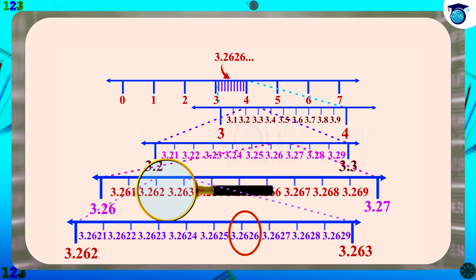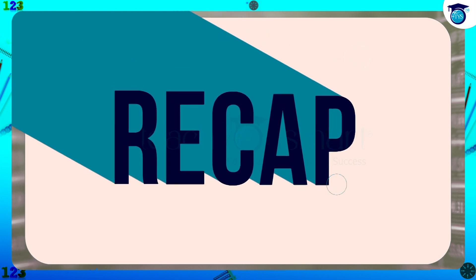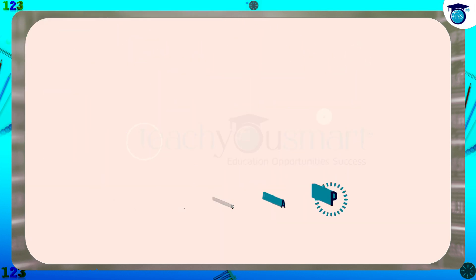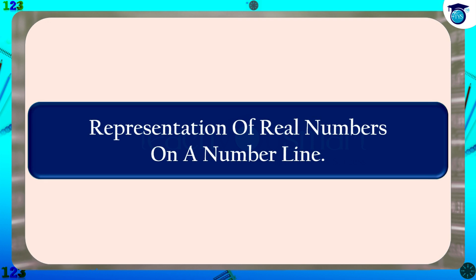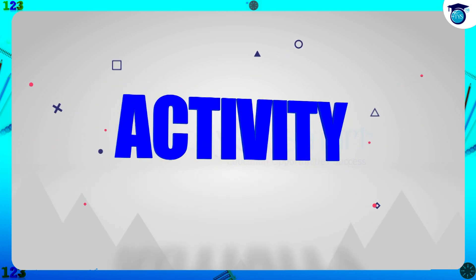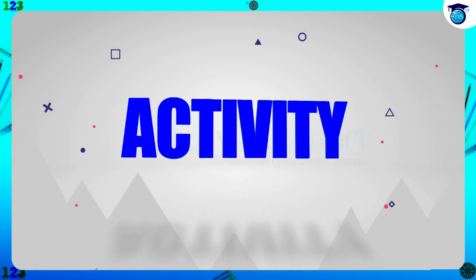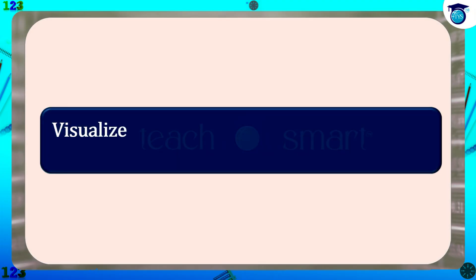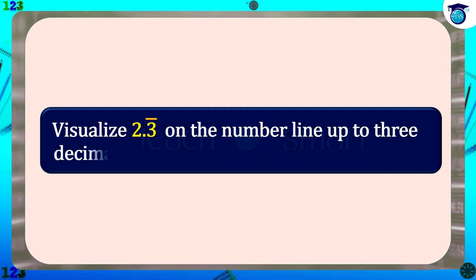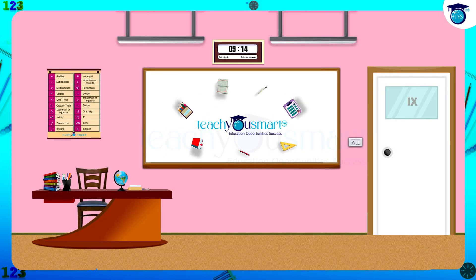Similarly, we can represent any real number on the number line. Let's recall what we discussed today: representation of real numbers on a number line. Before winding up, let's check how much you understood by doing an activity. Visualize 2.3 bar on the number line up to three decimal places. That's all for now. See you all in the next class with another interesting chapter.